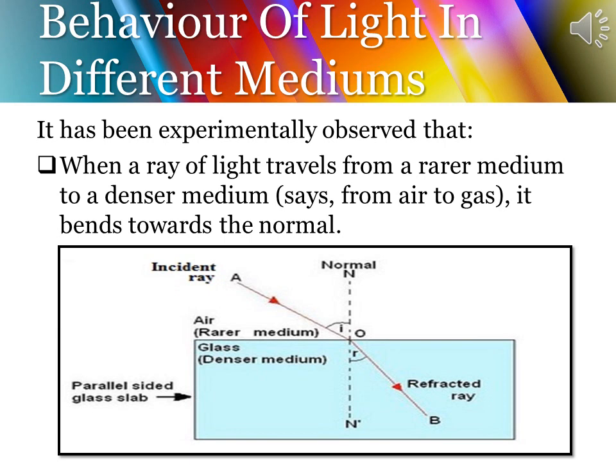It has been experimentally observed that when a ray of light travels from a rarer medium to a denser medium, it bends towards the normal. If you see the figure, the rarer medium is taken as air and the denser medium as glass. A ray of light entering from air, instead of moving straight, bends a bit towards the normal — this is the refracted ray, and the bending is due to the change in density of the two media.